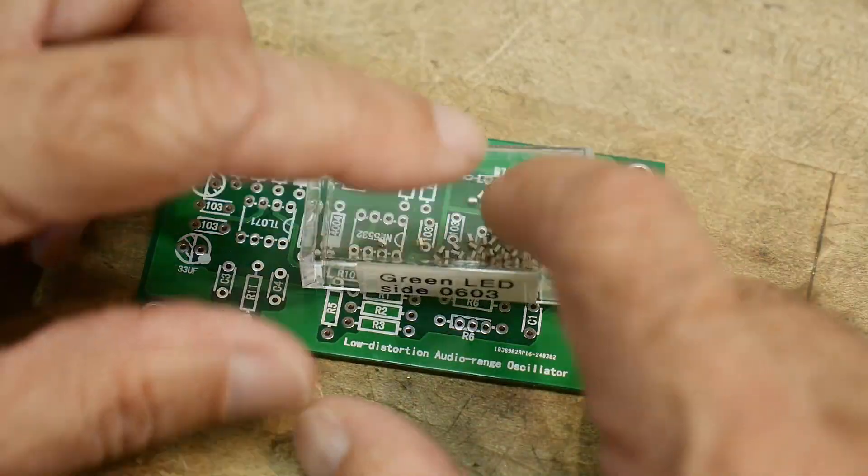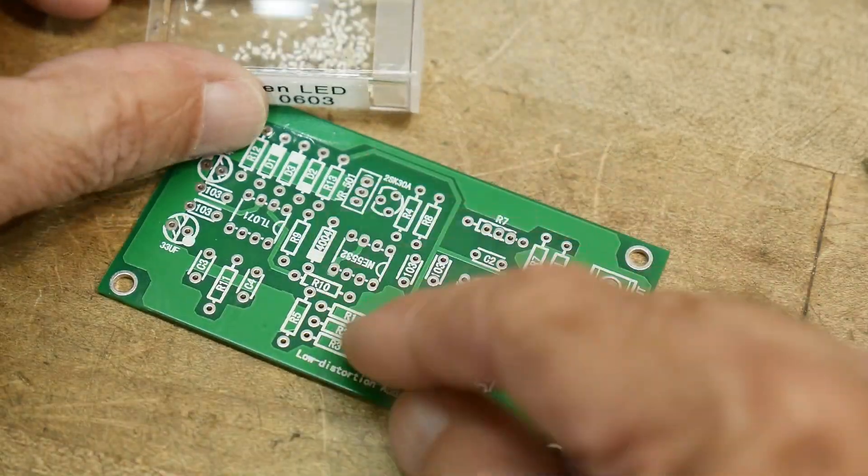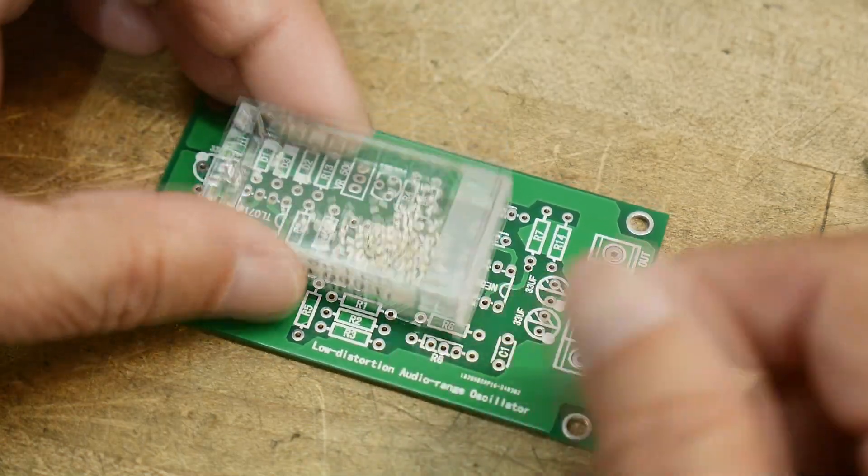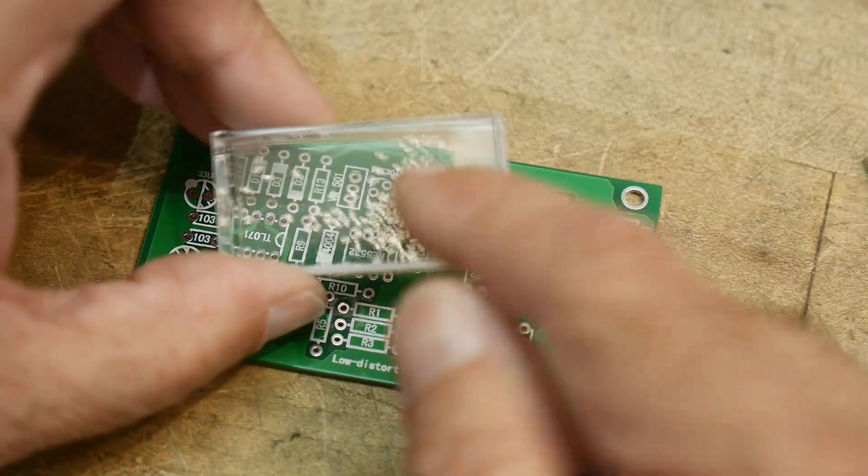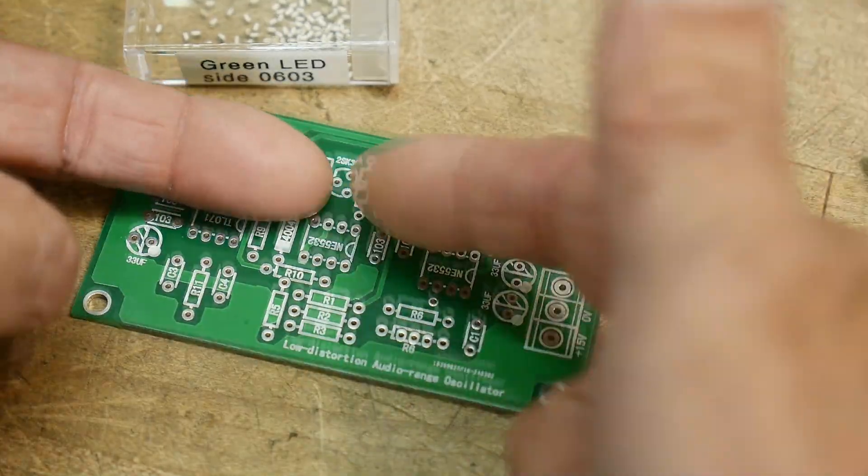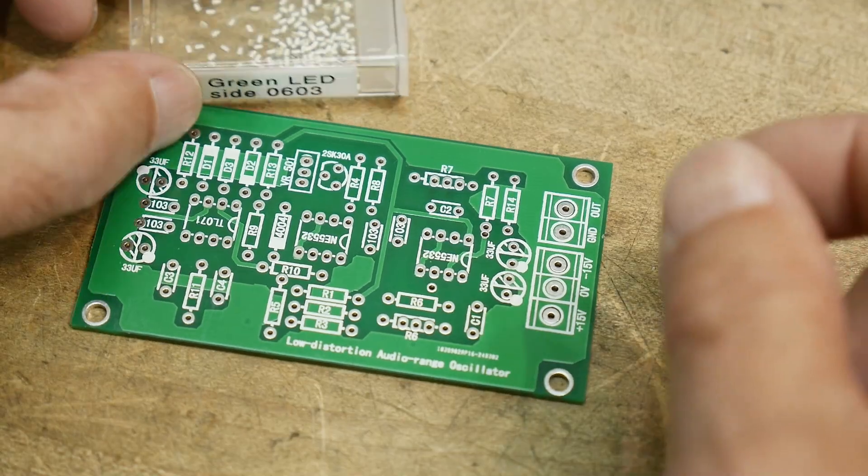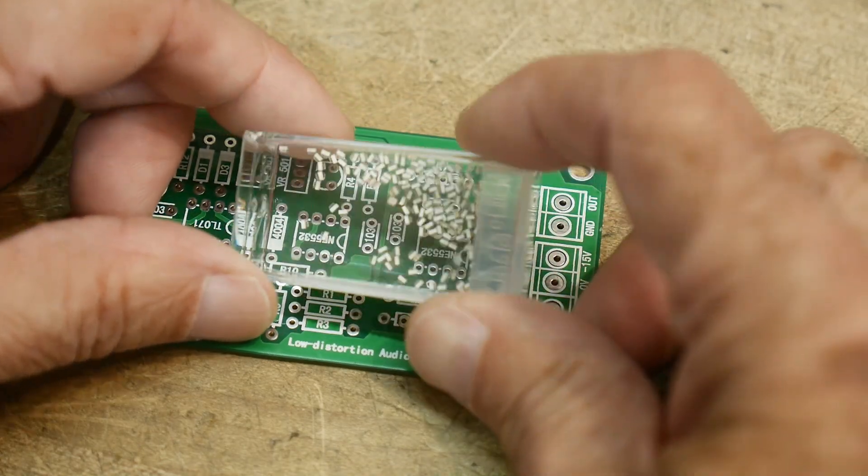Another reason these are built is for edge-lit displays. You can have an LCD display, and then you need to backlight it. You use these little LEDs to shine light into a light guide on the display. So you need side-emitting LEDs.